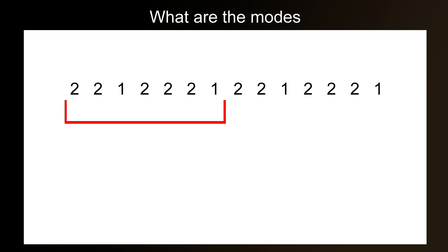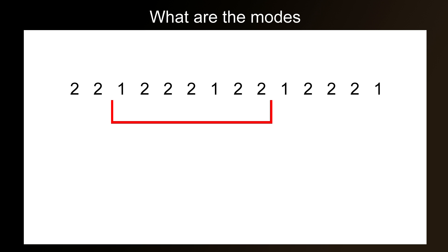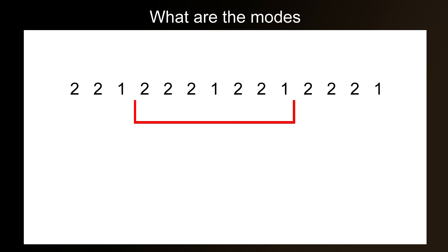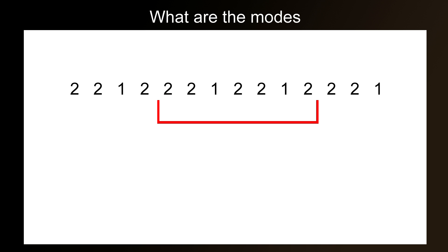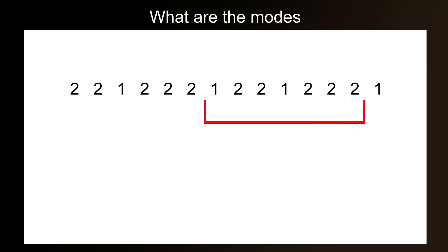Mode 1, the Ionian scale. Mode 2, the Dorian scale. Mode 3, the Phrygian scale. Mode 4, the Lydian scale. Mode 5, the Mixolydian scale. Mode 6, the Aeolian scale. Mode 7, the Locrian scale.